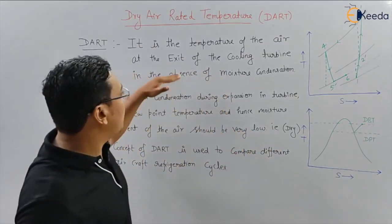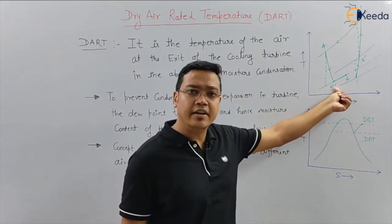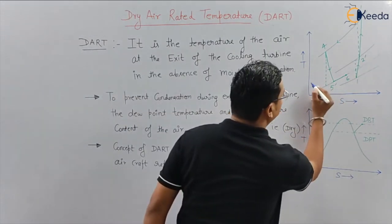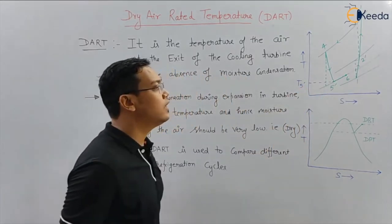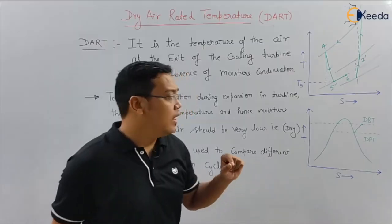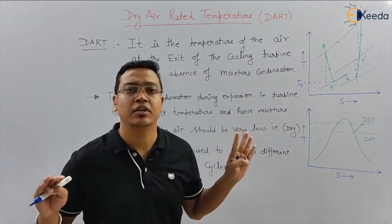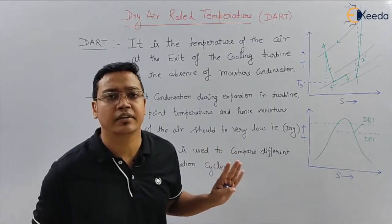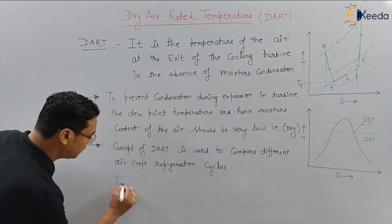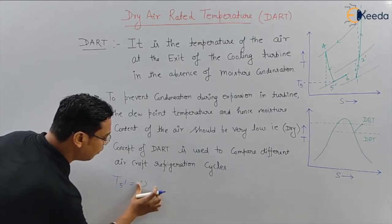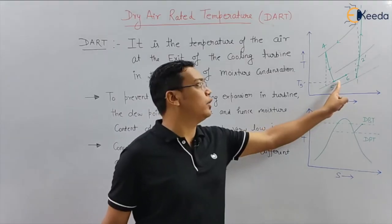From this definition you can easily identify that 5-dash is the exit of the cooling turbine. The temperature at this exit point is T 5-dash. According to the definition of DART, at this point there should be no moisture content. If there is no moisture content at point 5-dash, then the temperature T 5-dash will be the DART, also written as T_dart.